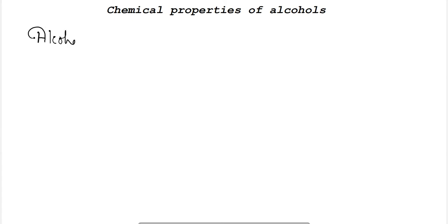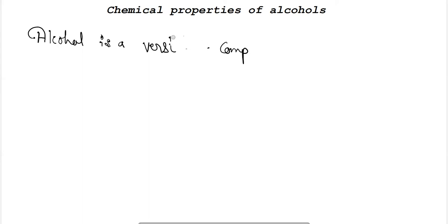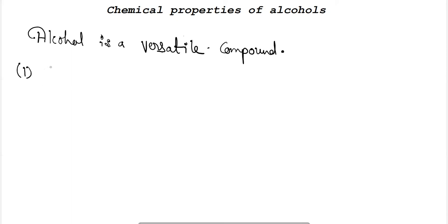Let's start with the chemical properties of alcohol, beginning with a discussion of alcohol's versatile nature. Alcohol is termed as one of the versatile compounds because it can behave both as an electrophile as well as a nucleophile.